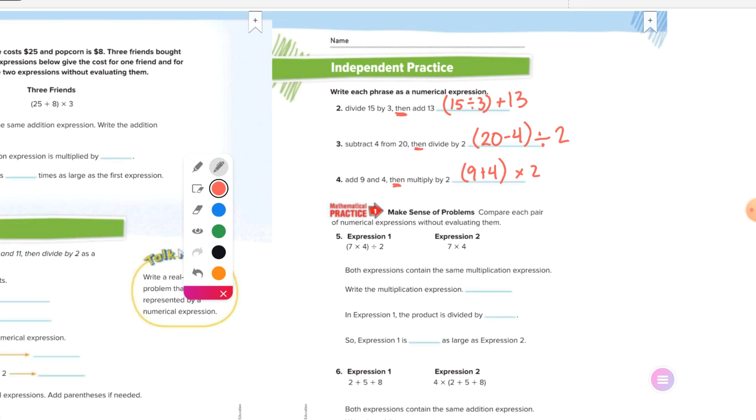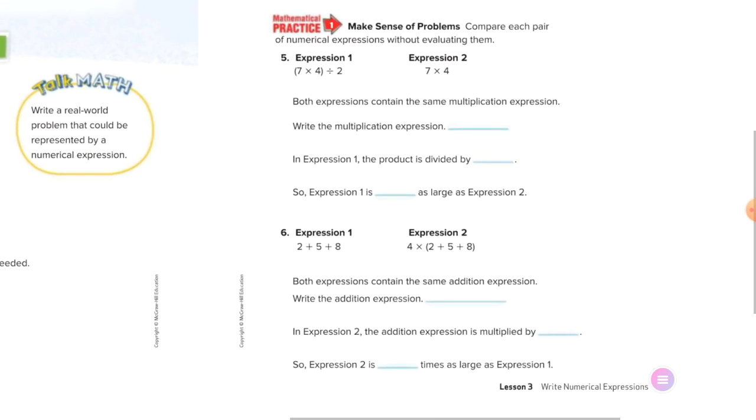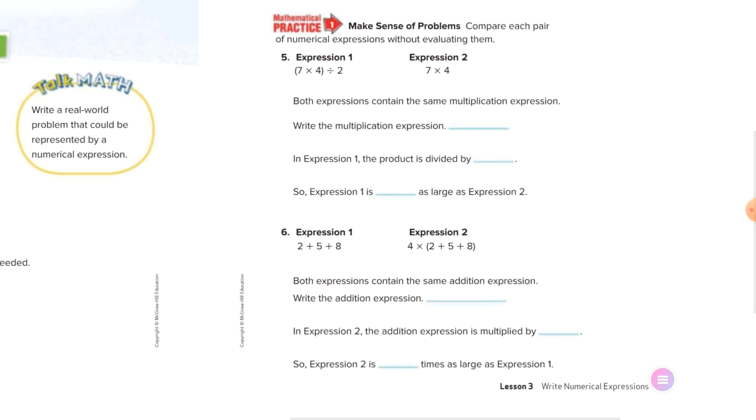Okay, at the bottom it's just getting us to compare expressions on five and six. So it says compare each pair of numerical expressions without evaluating, which means we're not finding an answer. We're just looking at it. Both expressions contain the same multiplication expression. Write the multiplication expression.